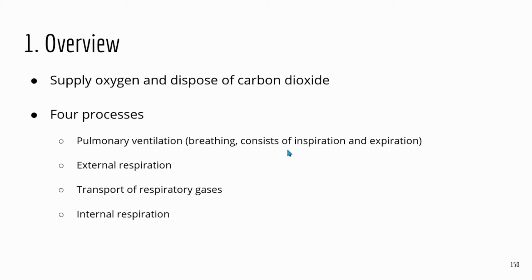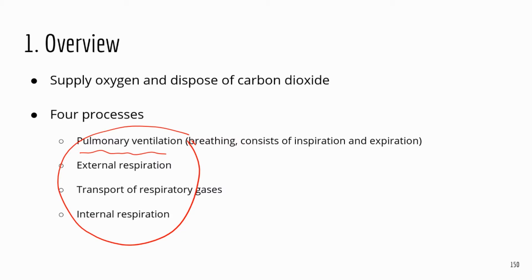There are four processes in respiration. You do not need to memorize these four processes — I just want to list them and go over the steps so that you're familiar with how the respiratory system works. The first step is pulmonary ventilation, which is basically breathing. The second step is external respiration, which happens at the lungs — you can think of it as gas exchange at the lungs.